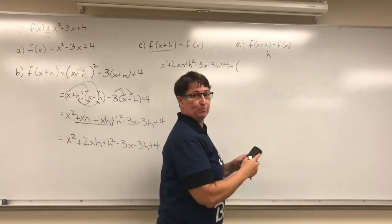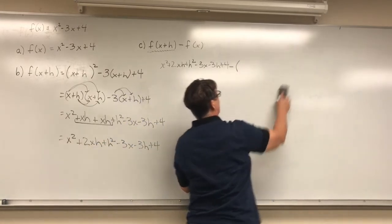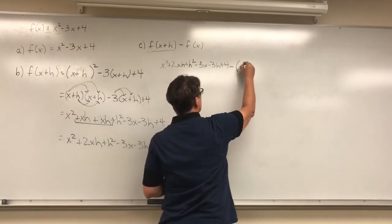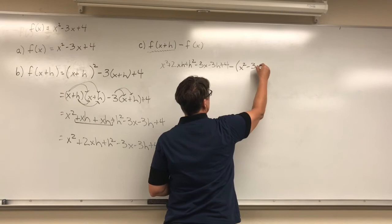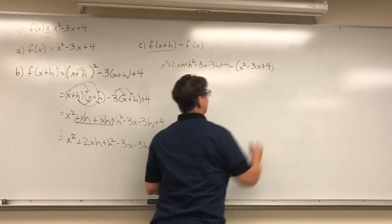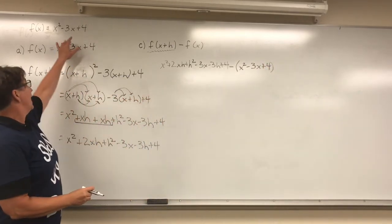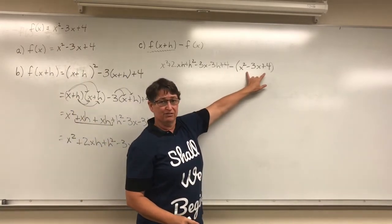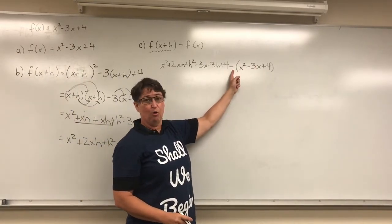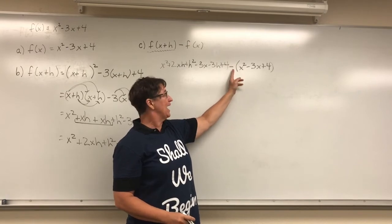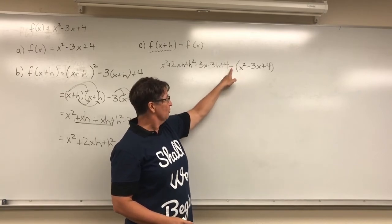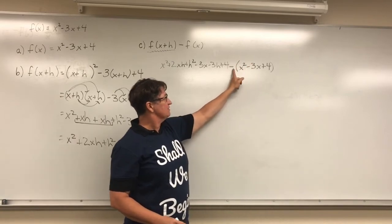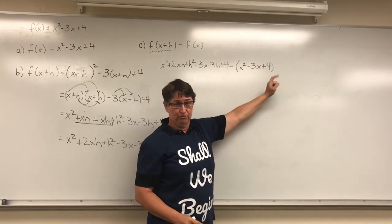I'm going to erase part D for just a minute—we'll come back to that just so I have room. So here I'm going to write x squared minus 3x plus 4. So I'm going to subtract that function. Notice that I put it inside parentheses. That's because I'm subtracting the whole thing. And when I do that, I have to remember to distribute this minus sign to each one of the terms in there.